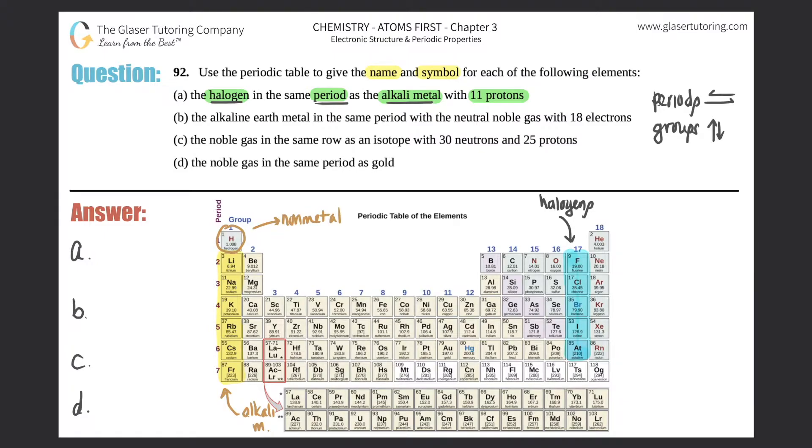Hydrogen is not part of alkali metals because it's a non-metal. Which one has 11 protons? That's the atomic number. Remember, the atomic number is always the number of protons. It's sodium, which has 11 protons, atomic number of 11. Now we just need to figure out which halogen is in the same period. If I go across period number three, the halogen would be chlorine. Simple as that.